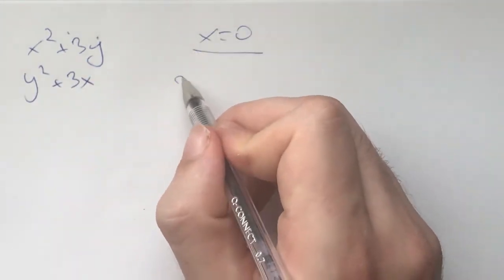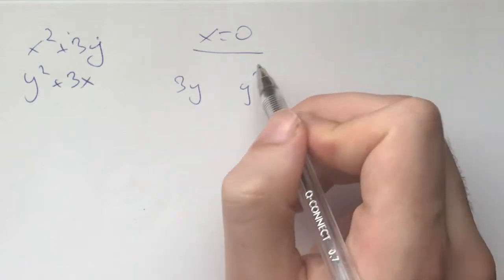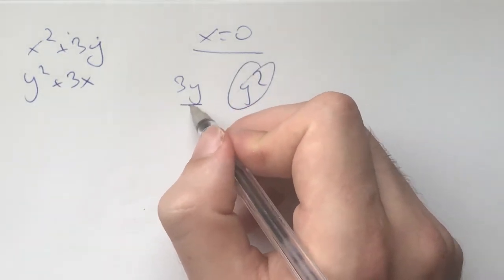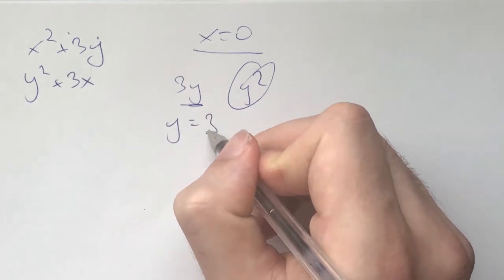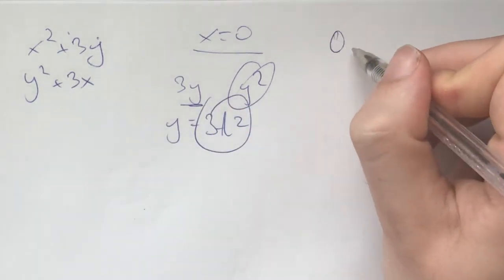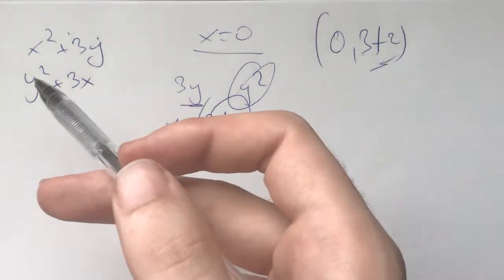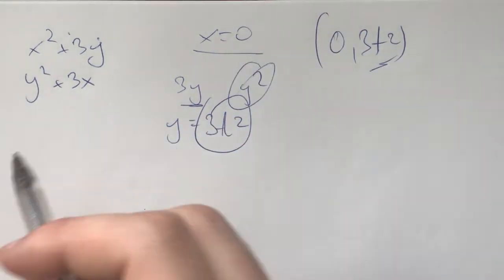If x is 0, then 3y and y² both need to be squares. Okay, this is already a square. And then y needs to be able to form 3t². That gives us the results 0 and 3t² for any t. And, of course, symmetrically for x.